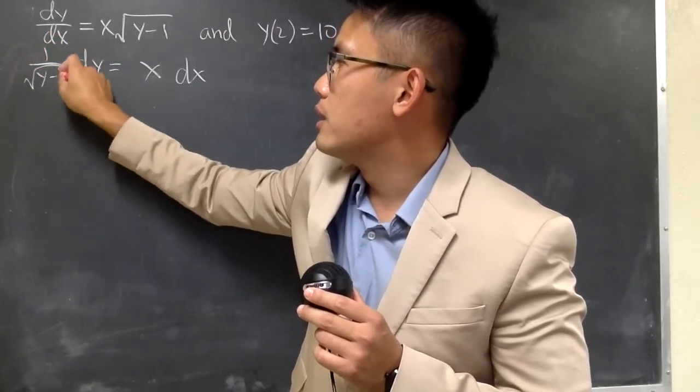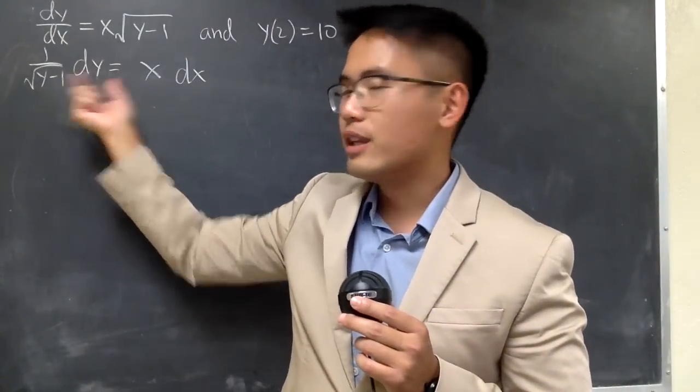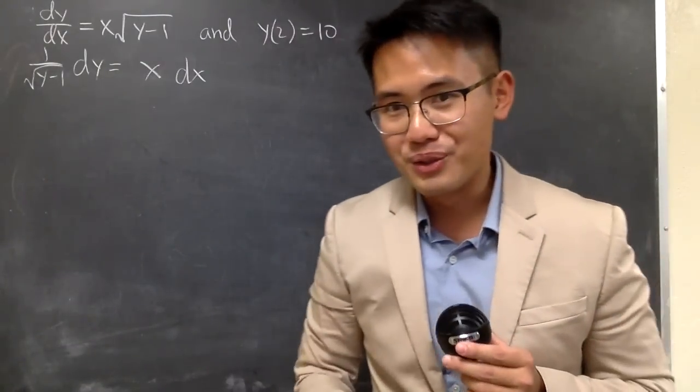So 1 over square root of y minus 1. And you see from here, we have the y and the dy together and the x and the dx together. We are good to go.